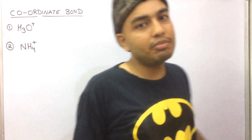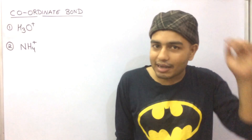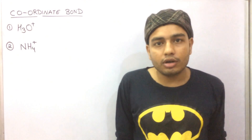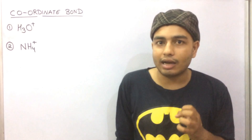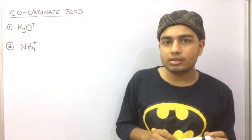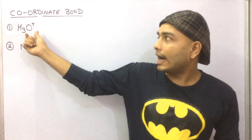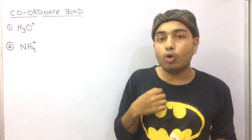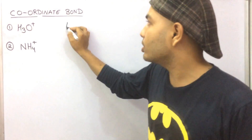Hello friends, today I'll be taking coordinate bond for ICSC chapter 2 chemical bonding. So what is coordinate bond? I will try to explain it through an example. There are two compounds in your syllabus which contain coordinate bond: the first is hydronium ion and the second is ammonium ion. Let us go to hydronium ion.